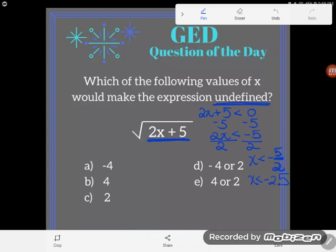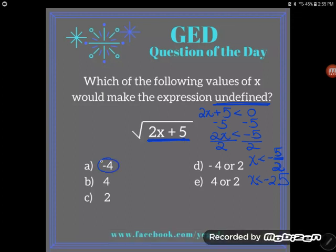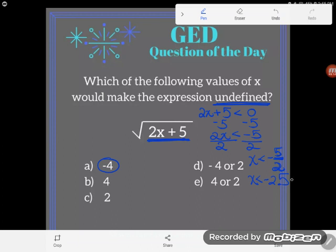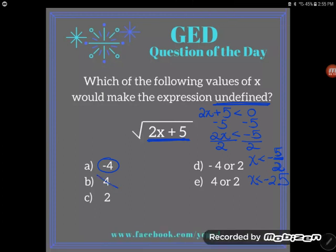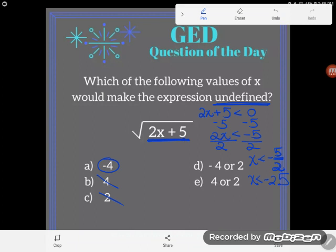So taking a look at these, if negative 4 is less than negative 5 halves, or negative 2.5... but positive 4 is not, it's greater, and 2 is also greater. And so the only answer here that works is a.